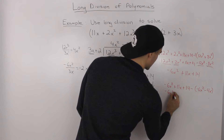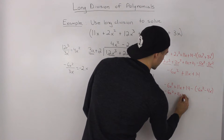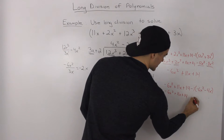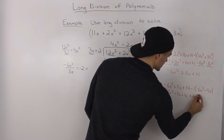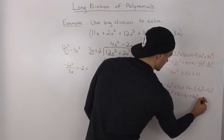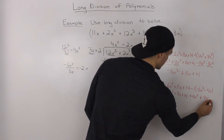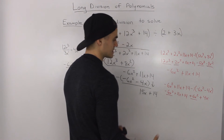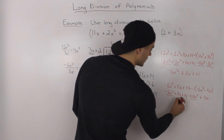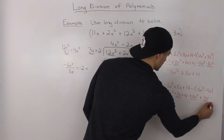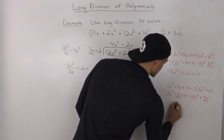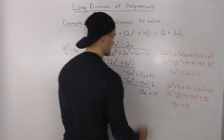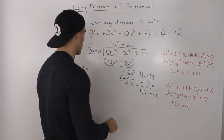So we have negative 6x squared plus 11x plus 14, then distribute the negative 1 inside the bracket — that gives us plus 6x squared and positive 4x. Negative 6x squared plus 6x squared nets out to 0. Then 11x plus 4x is 15x, and we're left with the 14. That's the same result as before.